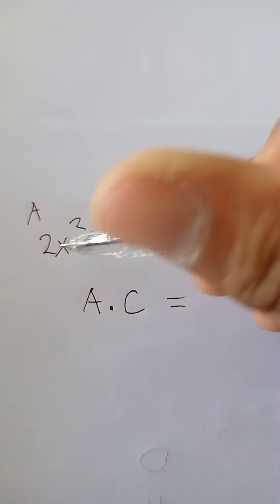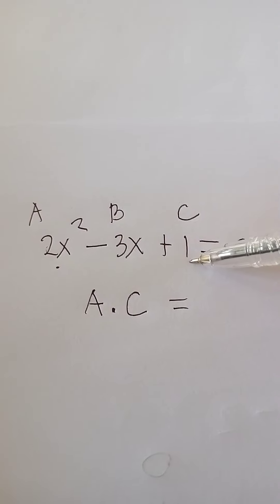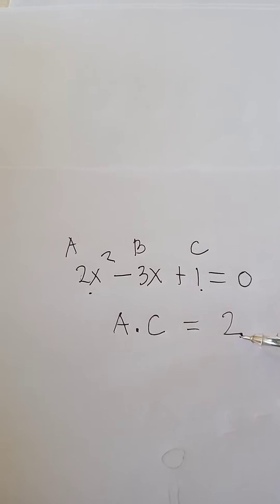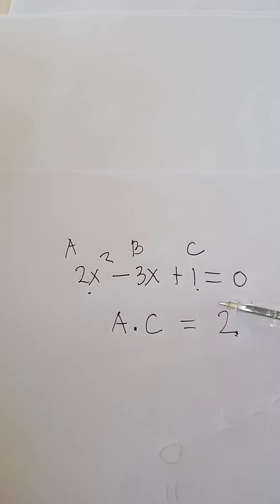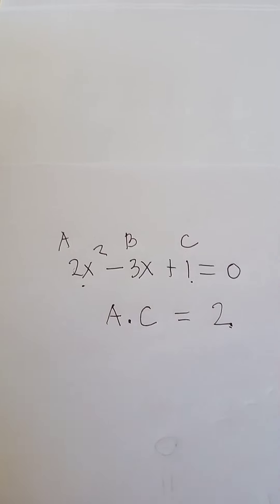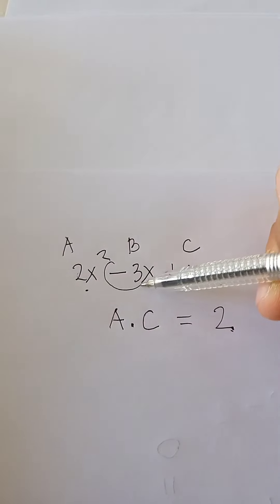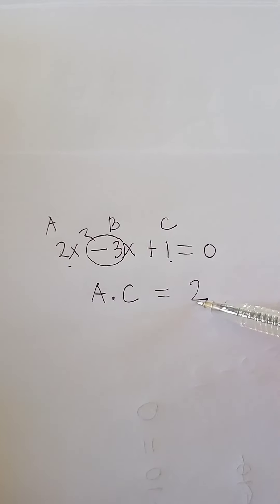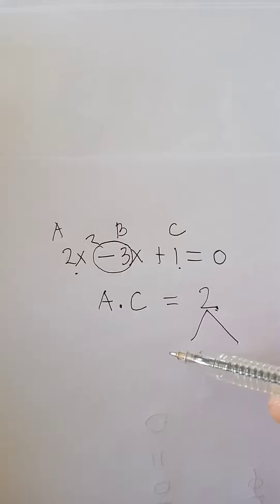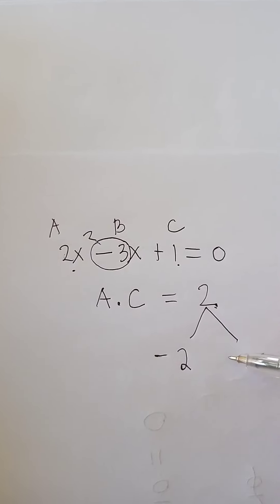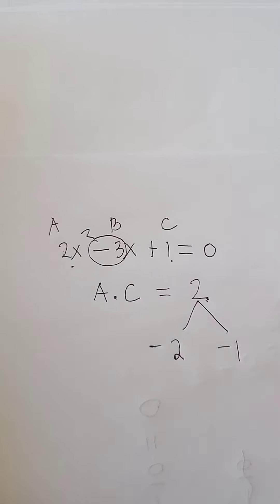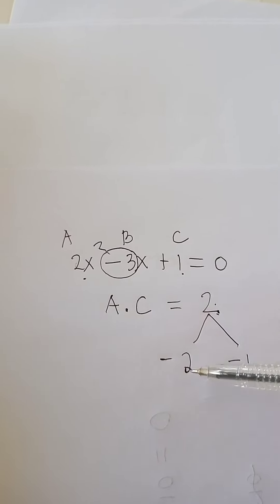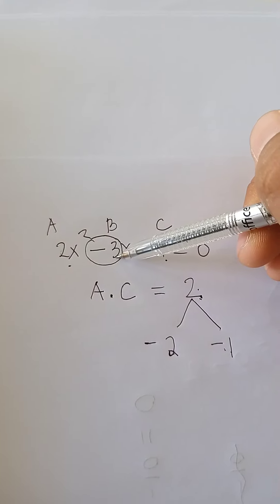So here we have 2 times 1, that is equal to 2. We are going to factor out 2 such that the sum of the factors of 2 is equal to the value of B, which is negative 3. So the factors of 2 whose sum is negative 3 are negative 2 and negative 1.